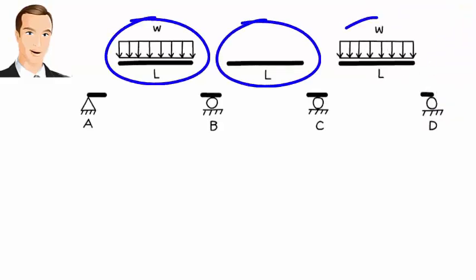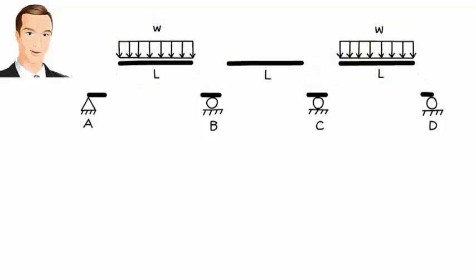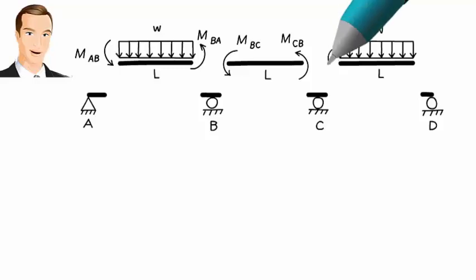Note the three beam segments. Generally, there is an internal bending moment at either end of each segment. For segment AB, we show an internal bending moment at the left end and right end. Let's denote the left bending moment as M_AB and the right bending moment as M_BA. Similarly for BC, we have M_BC at the left end and M_CB at the right end. The end moments for segment CD are M_CD and M_DC.